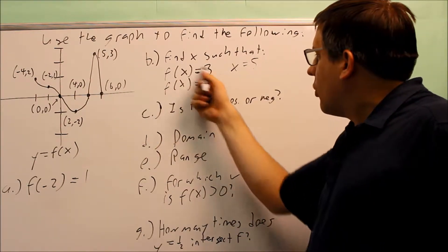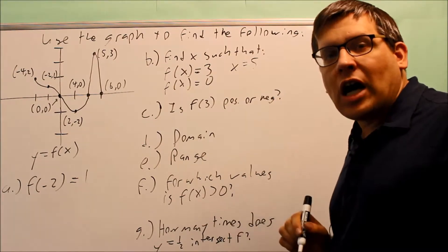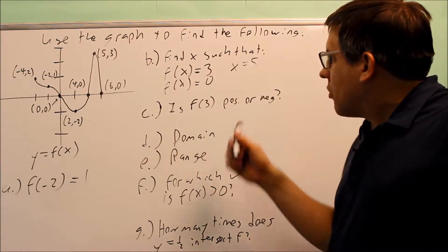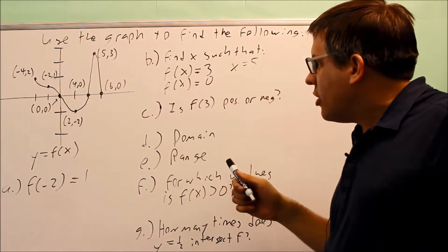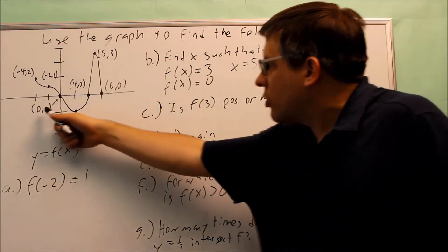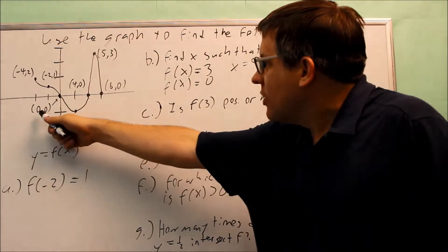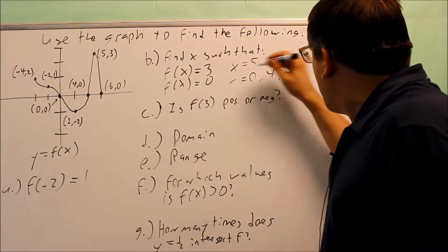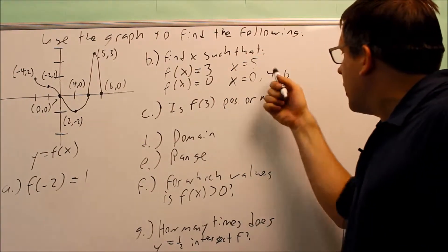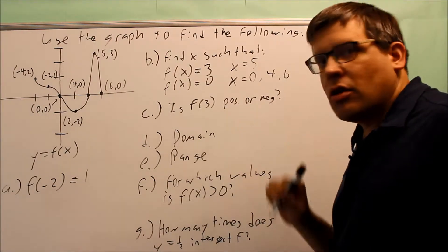Now I'm looking for f(x) = 0. I want to find the x value that gives me a y value of 0. So I want to look any place on here where I have a y value of 0 and see what the corresponding x values are. There's three places where this occurs: at 0, 4, and 6. Those are my x values that give me a y value of 0.